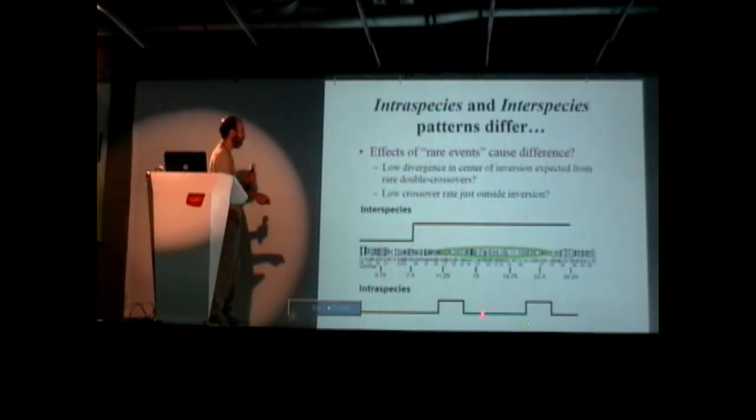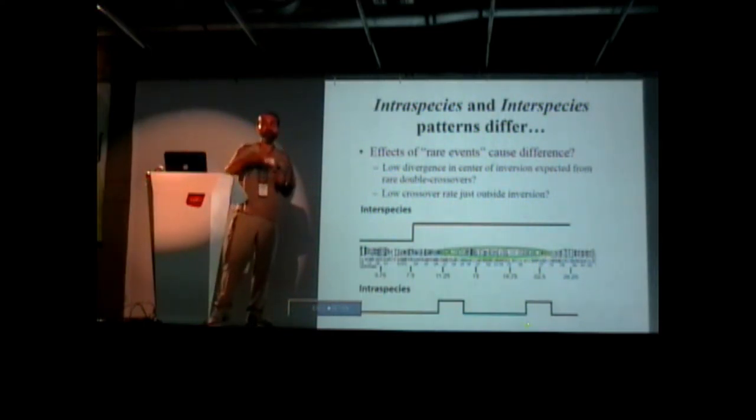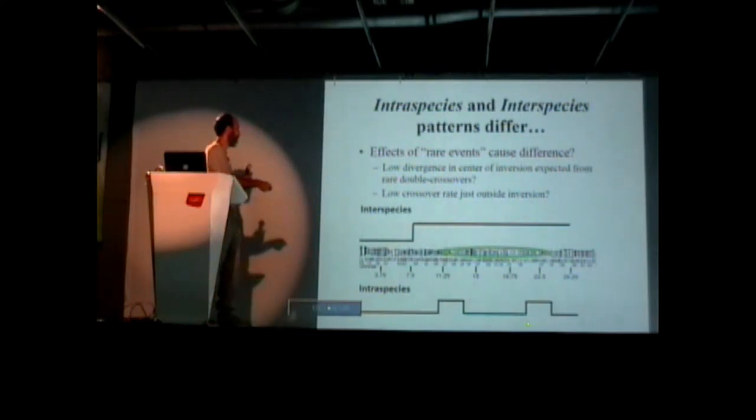We hypothesize that it's the effect of rare events that cause a difference. What reduces this in the middle is that you have these double crossovers. Double crossovers are rare. If double crossovers are rare and hybrids are rare, you have rare times rare, so basically it almost never happens. So within species, you never get enough double crossovers to reduce divergence. Same sort of thing out here. Any sort of crossing over in that region is very rare, but since hybrids are also rare, you just don't really get an effect. So within species, you only have these small pockets of high difference.